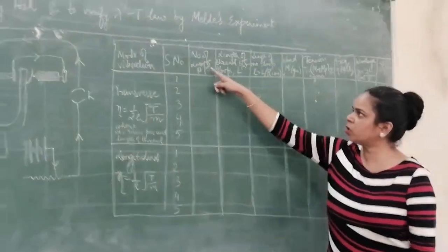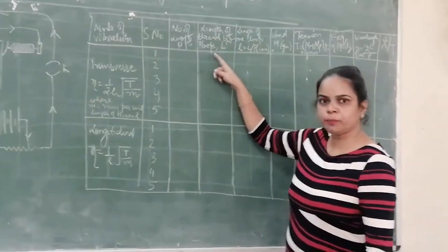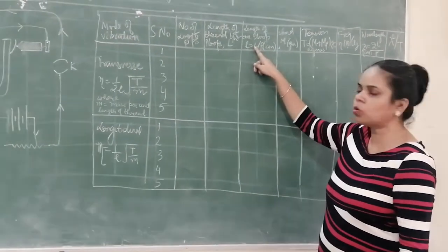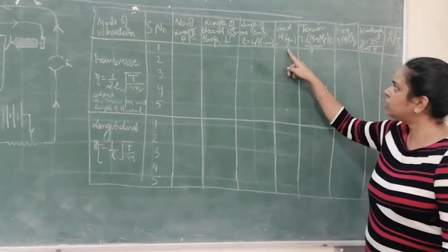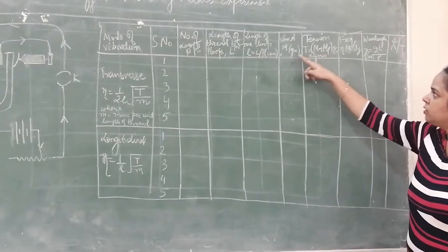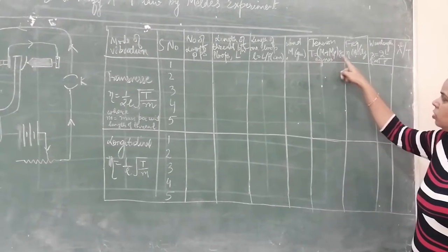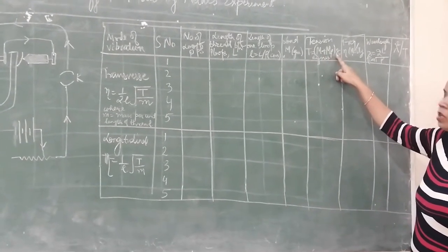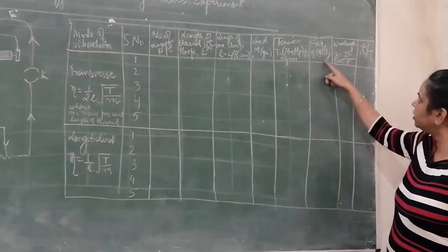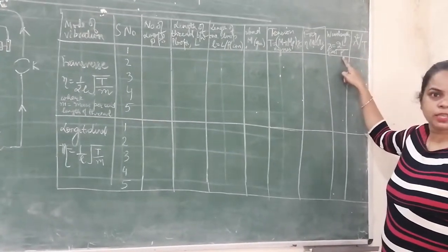What we will be calculating? From the loops, we shall record the number of loops. We shall see what is the length of the thread between the P loops. Then we shall calculate what is the length of one loop, that is by dividing the total length by the number of loops. Then we shall see what mode we have to end. Then we shall calculate the tension, that is mass that is added in the pan and the mass of the pan. That T will be equal to M plus MC into G, that is 9.8. And then frequency we can calculate using the formula which we have discussed earlier.